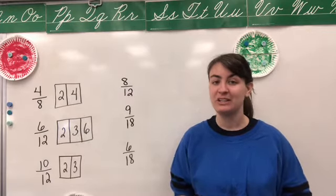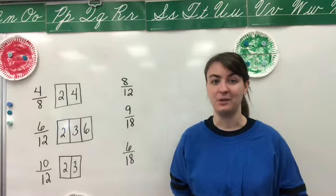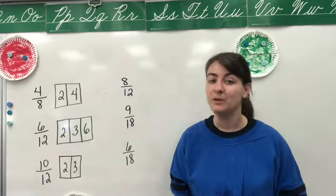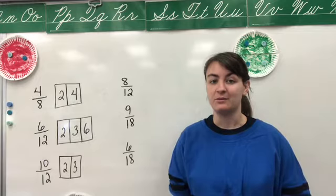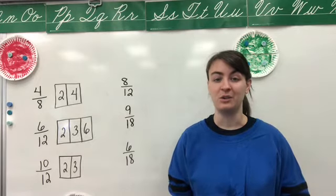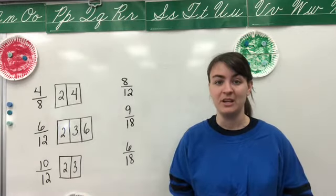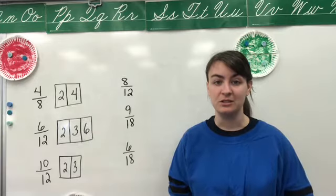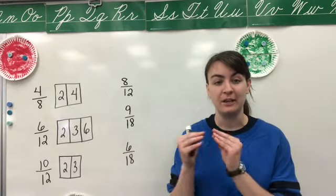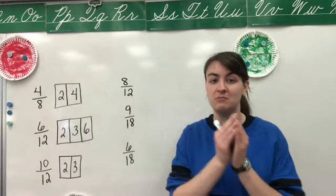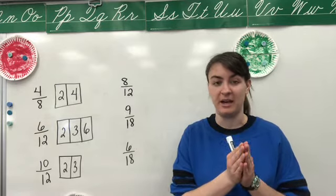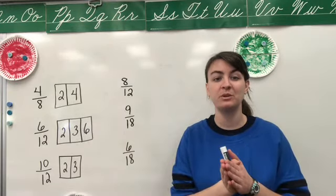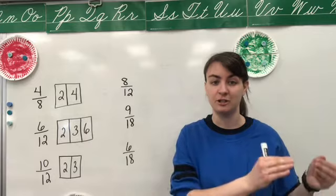Before I start talking about reducing fractions, I want to back us up and review finding equivalent fractions. You've been working on finding equivalent fractions for quite some time, and when we find equivalent fractions, we're trying to take a smaller fraction and multiply it by a number, or a fraction that's equal to one, in order to get a larger fraction.